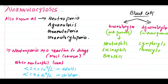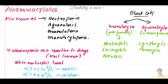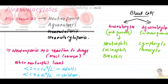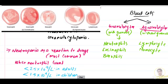Hello everyone, welcome back to another session in dentistry. Today we have a topic from oral pathology that also comes in general medicine — that is agranulocytosis. Before moving on, let's see what granulocytes and agranulocytes are. We know blood cells can be classified as granulocytes and agranulocytes. Granulocytes are those cells which have granules in the cytoplasm.